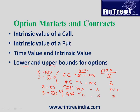For a dividend-paying stock, how do we calculate lower and upper bounds? The logic is: if a stock pays a dividend, the value of the stock reduces after the dividend is paid. Therefore, everywhere you have S in the bounds formulas, simply replace S with (S − PV of dividend). This gives you the lower bounds on a dividend-paying stock.